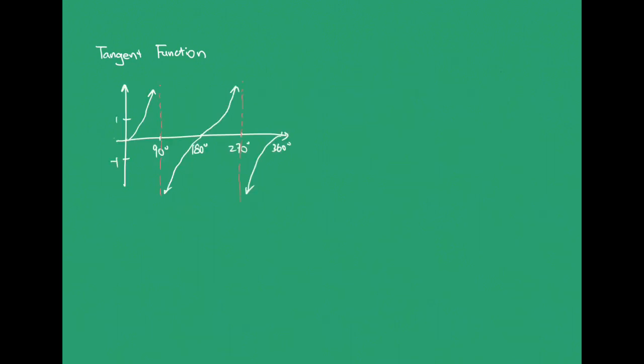So the graph would look like this. It has two asymptotes in 90 degrees and 270 degrees. And you can see that it's positive in the first and third quadrant and negative in the second and fourth.